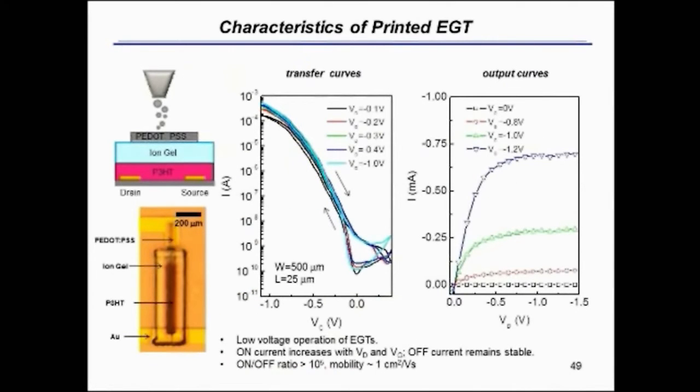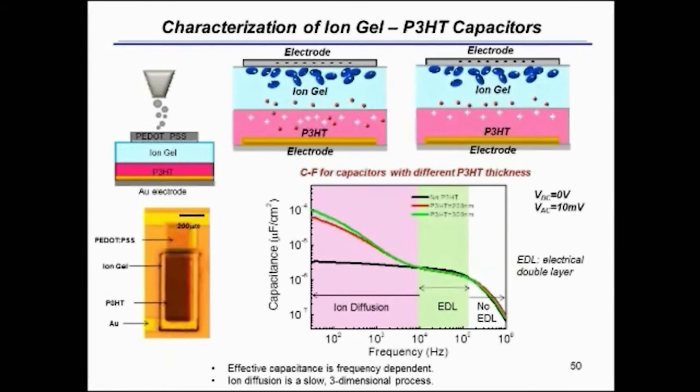And on this slide I show you just again transistor characteristics showing that this is what we were able to achieve on these plastic substrates, very nice looking transistors, good on-to-off ratios, turning on near zero volts. We used P-type devices in this application.